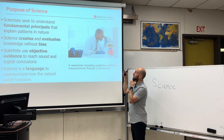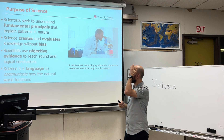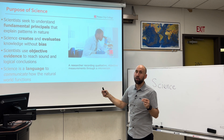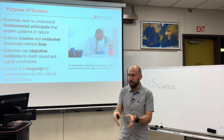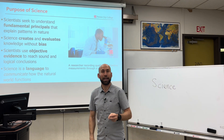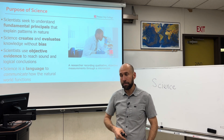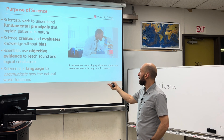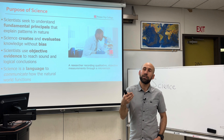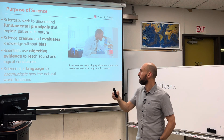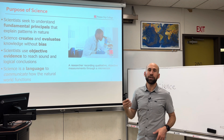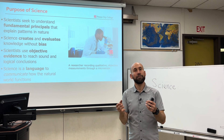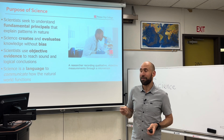The purpose of science is to seek out fundamental principles that explain patterns in nature — to explain how our world works. We do this through creating knowledge and evaluating knowledge that's already been created, without bias. This is the hard part because inherently human beings are biased. We see the world through our own eyes. When science is done, we seek to use objective evidence that is free from bias to reach logical conclusions. It's not easy to do. It's really easy to put personal influence into your science, but the objective of science is to be objective and free from bias.